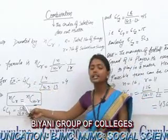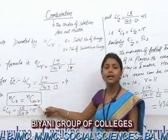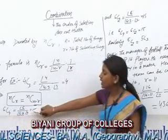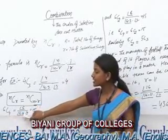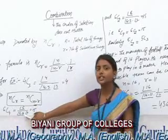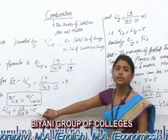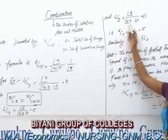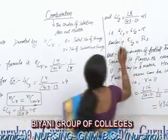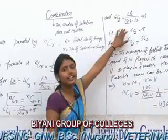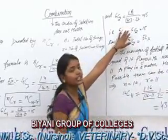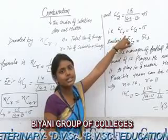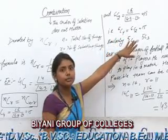The formula NCR is equal to NC(N minus R). The value of 6C4 is equal to factorial 6 upon factorial (6 minus 4) into factorial 4, which is equal to 15. And the value of 6C2 is equal to factorial 6 upon factorial (6 minus 2) into factorial 2, which is also equal to 15. That means the value of 6C4 is equal to 6C2, which is equal to 15.